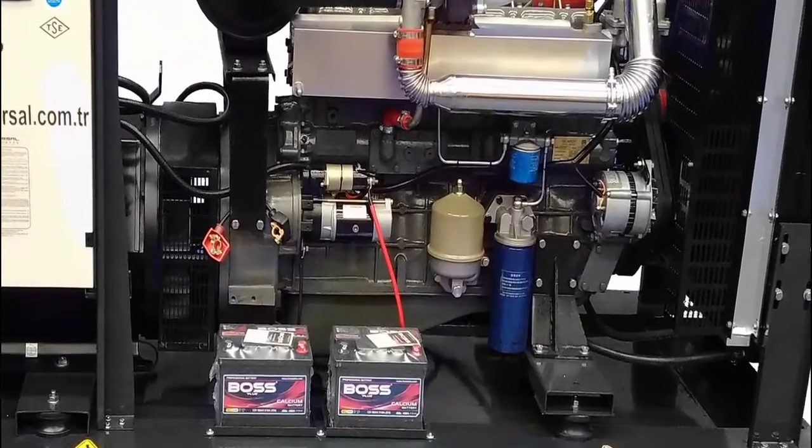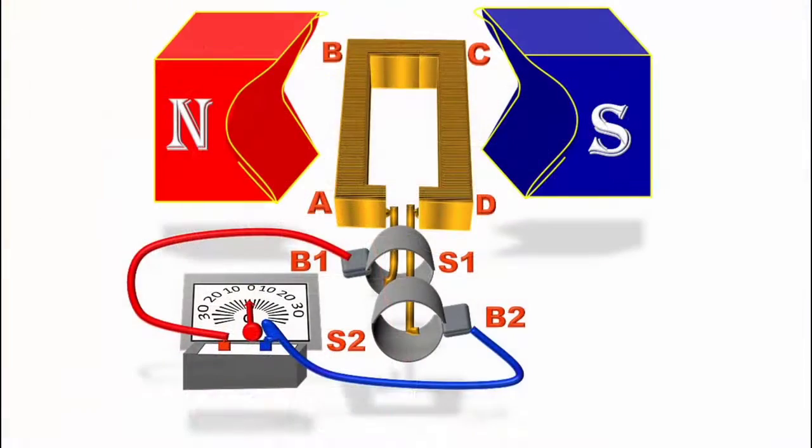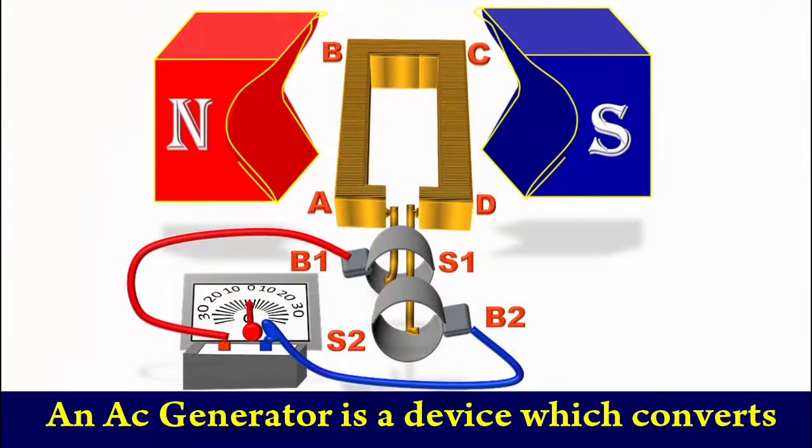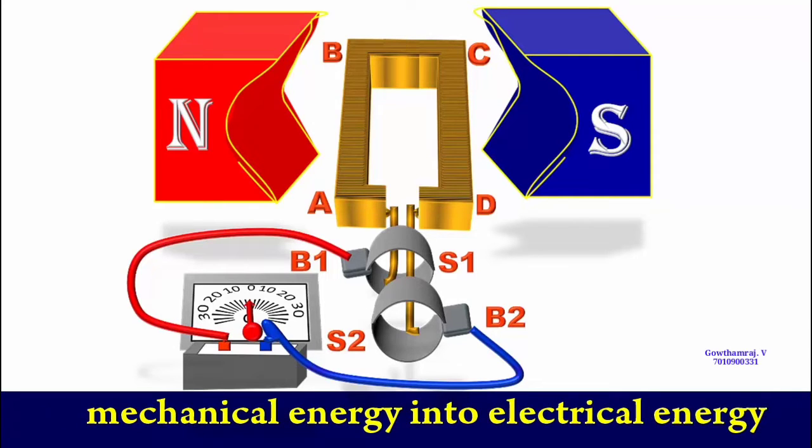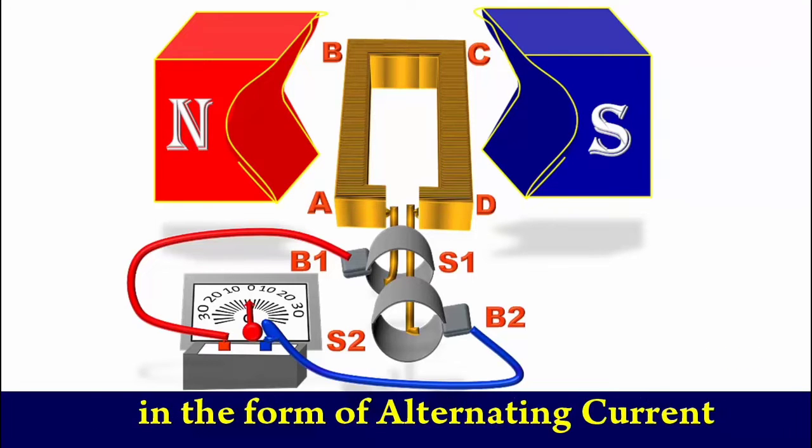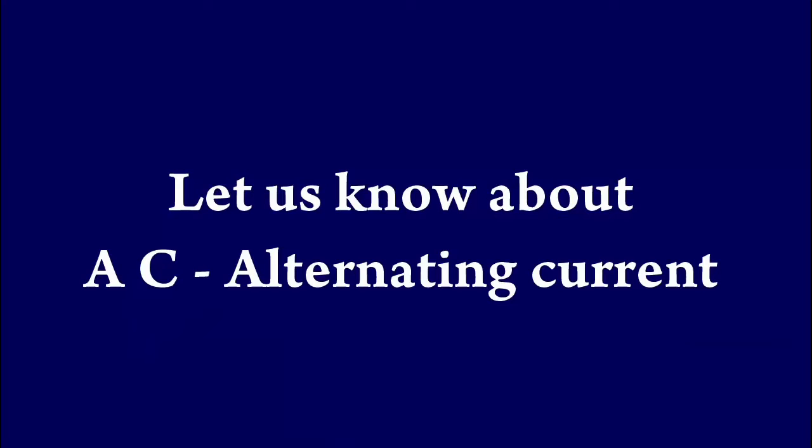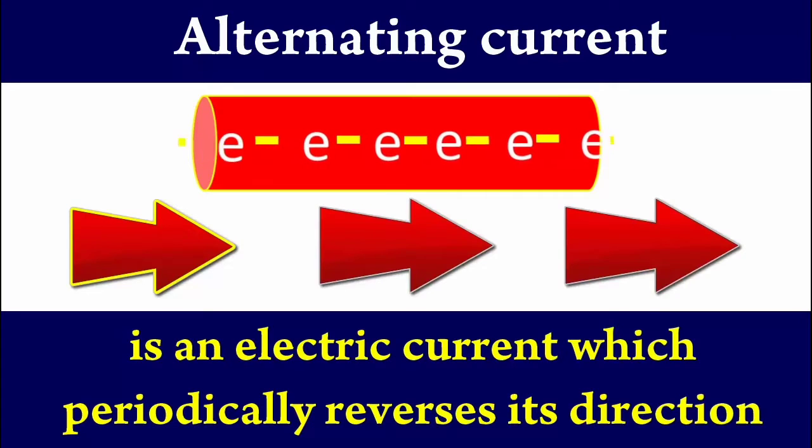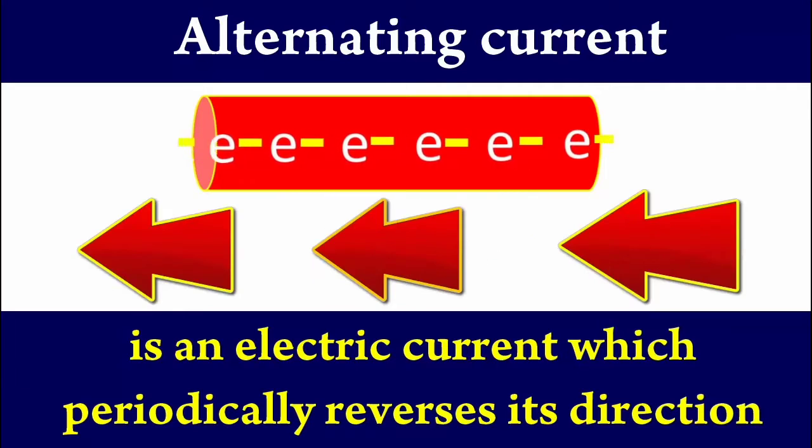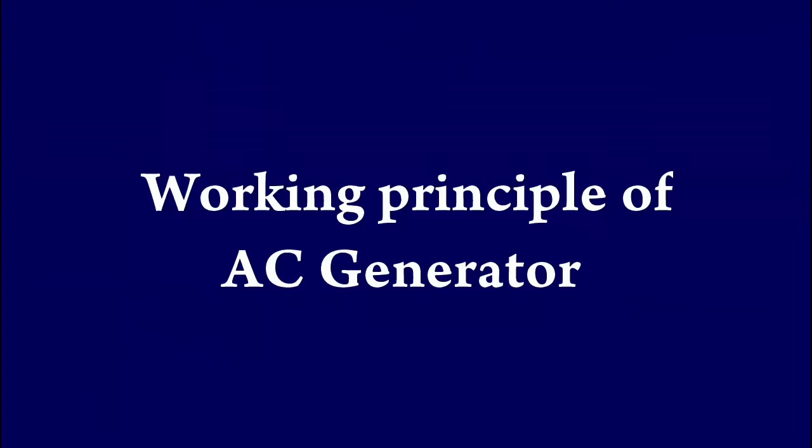An AC generator is a device which converts mechanical energy into electrical energy in the form of alternating current. Alternating current is an electric current which periodically reverses its direction.